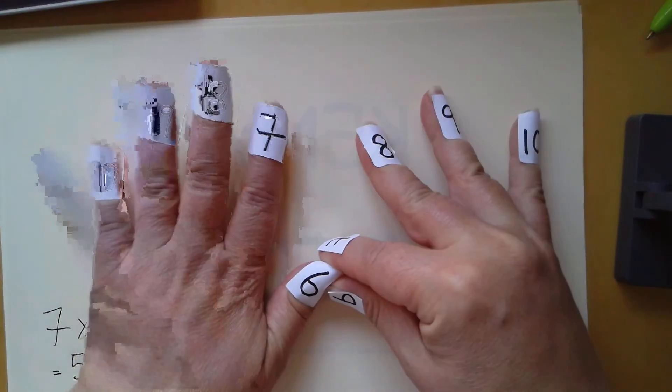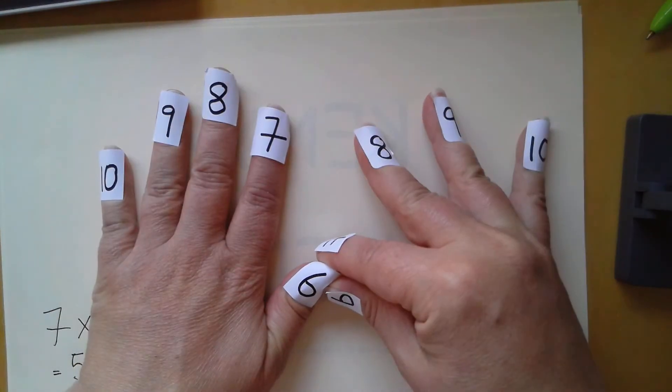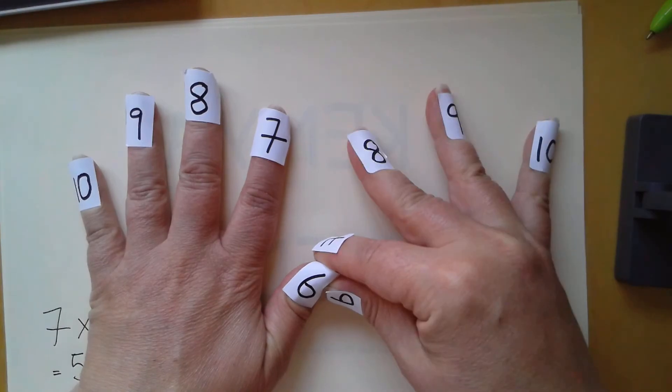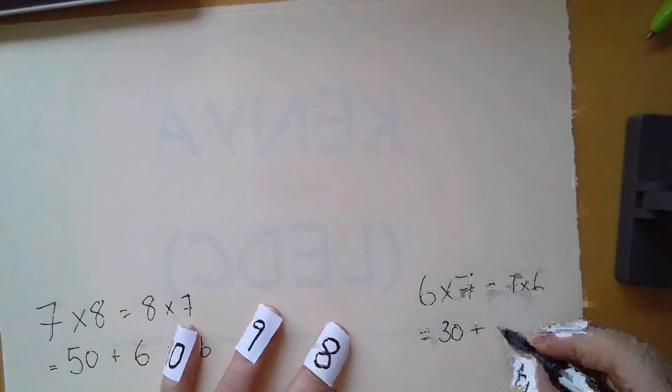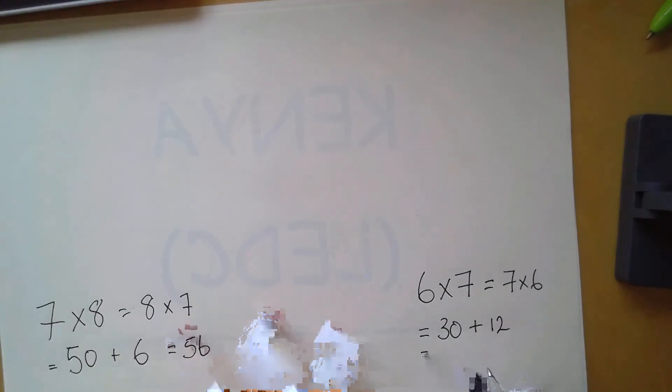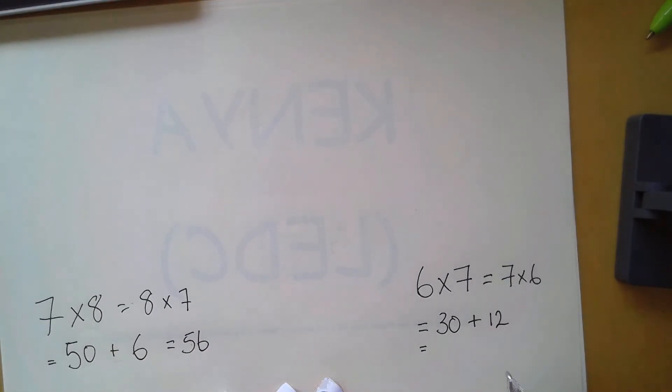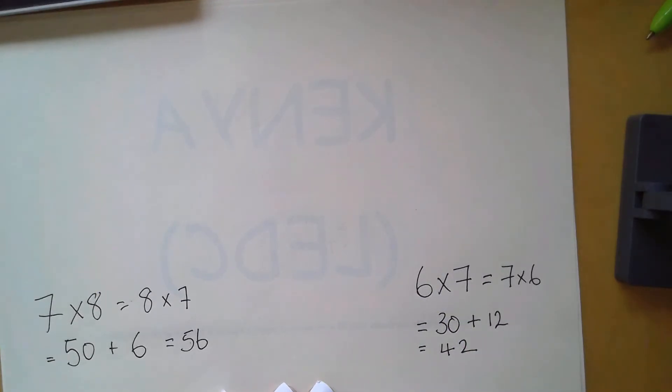Then what have I got? Well, I've got four here and three here. Four multiplied by three equals twelve. Thirty plus twelve is forty-two. So six multiplied by seven is forty-two. Seven multiplied by six is forty-two.